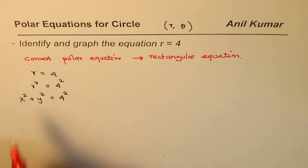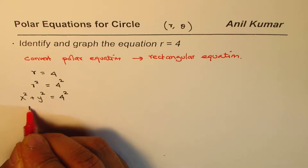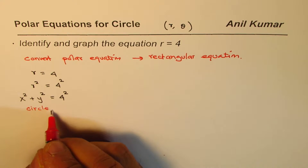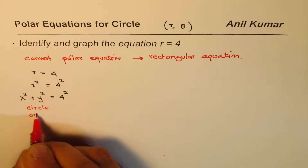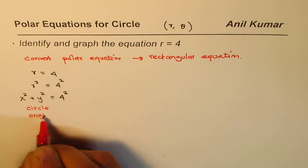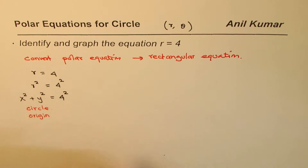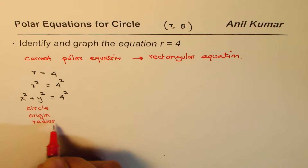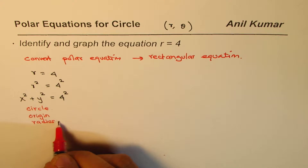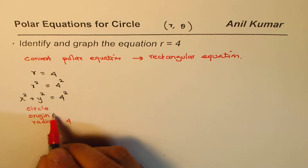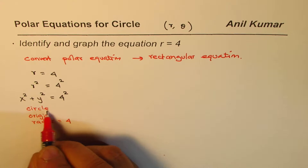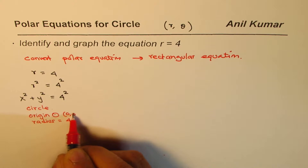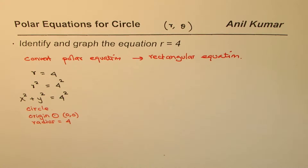x squared plus y squared equals 4 squared — what does that remind you of? We know this is the equation of a circle with the origin as the center and a radius of four units. So the center of the circle is at the origin, zero zero.